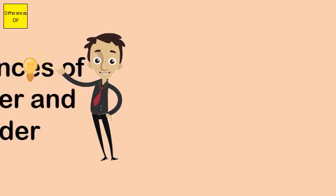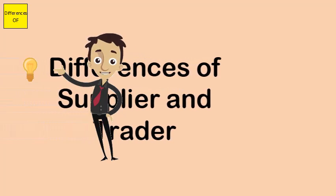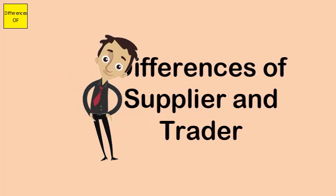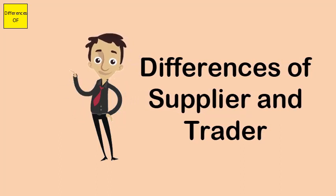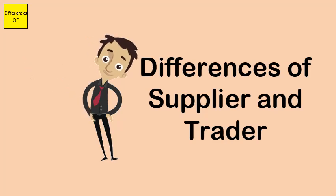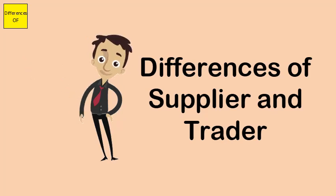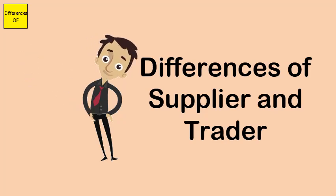Difference between supplier and trader. A supplier is someone who supplies products to the respective authority. A trader is one who first buys and then sells the product or currency. Suppliers are someone whose business is to supply a particular service or commodity.